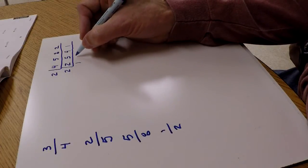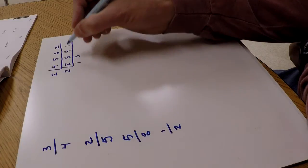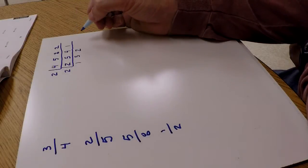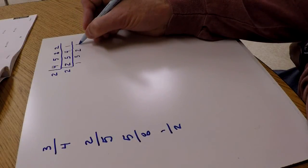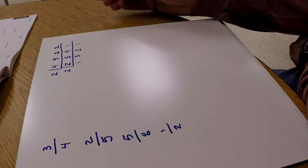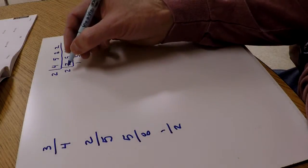2 won't go into 1, so I just bring the 1 down. So I have these four numbers on the bottom and the two numbers on the side. Basically all I have to do is just multiply these together.